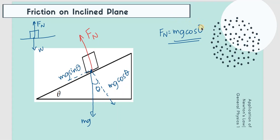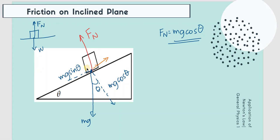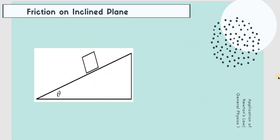If there is a frictional force acting here, you still use the same formula: small f equals mu, the coefficient of friction, multiplied by the normal force. Substituting the value of normal force on an inclined plane, your frictional force equals mu multiplied by mg cosine theta. This applies whether it's static or kinetic friction.